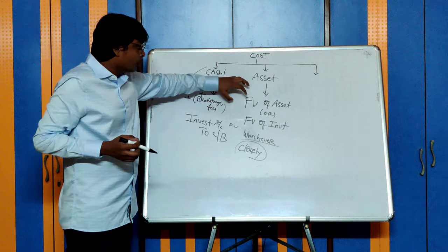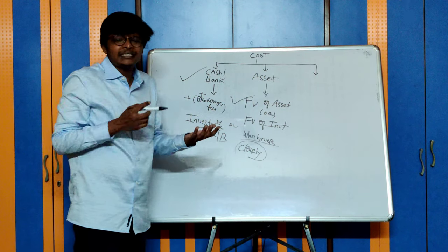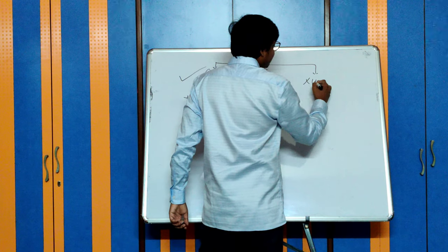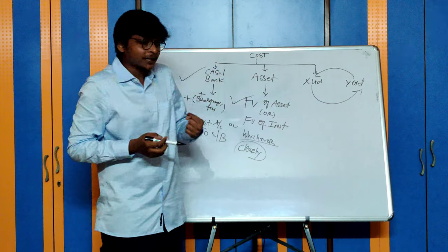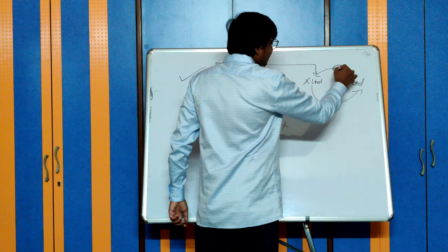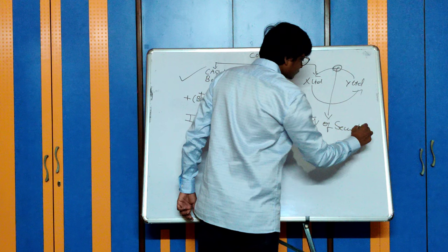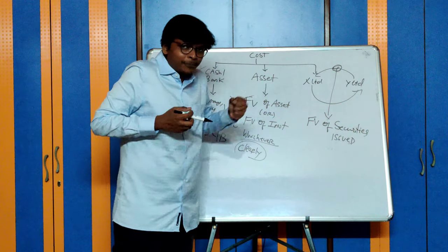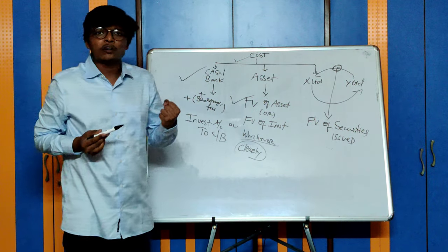Between these two, which is more logical — not higher, but more appropriate fair value — meaning it has more comparables and is computed correctly, we will consider that. The third case is where X Limited and Y Limited exist — I am getting securities of X Limited by giving securities of my own company. How do I value this? Value them at the fair value of securities issued. This is the concept of cost — what is the cost of my investment?